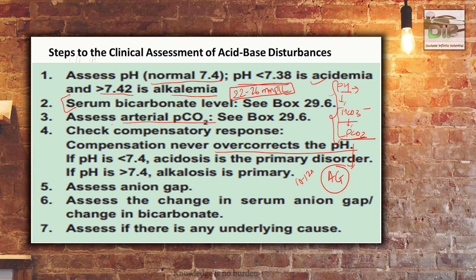The fourth step is to look for the anion gap, which is normally around 10 to 12 mmol per liter. It can be increased in acidosis or decreased in case of hypoalbuminemia. Then after this we have to determine the cause of the acid-base imbalance. So the steps are: first pH, second bicarbonate, third pCO2, fourth anion gap, and finally the cause.